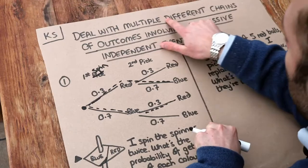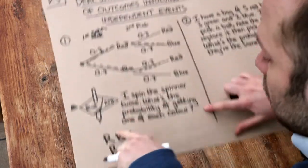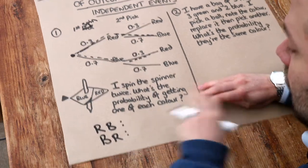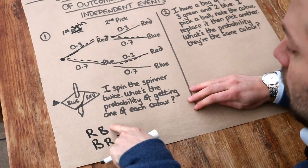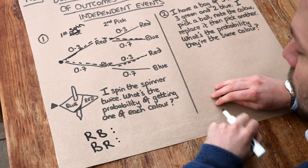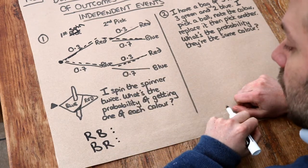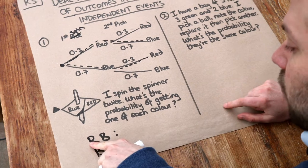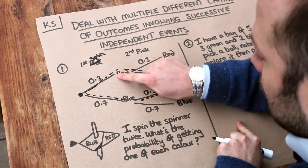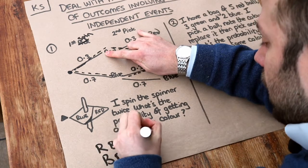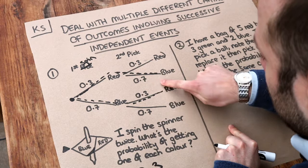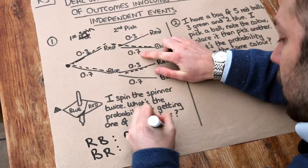Whenever you have multiple different chains of outcomes — multiple different possibilities like red-blue or blue-red — I list them out first, put a colon after each, and then find the probability of each possible sequence. So what's the probability of getting red and then blue? Following the tree, the probability of getting red on the first spin is 0.3. Then, given red on the first spin, the probability of getting blue is 0.7.